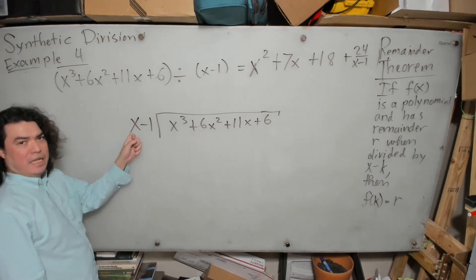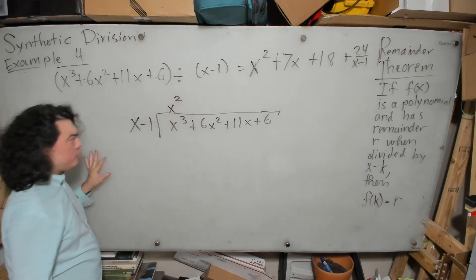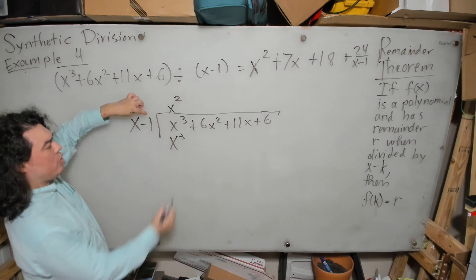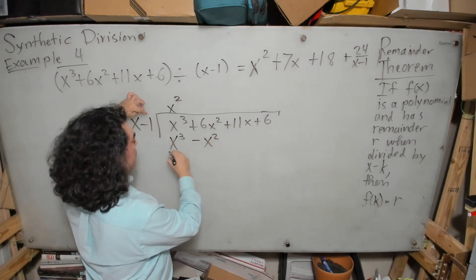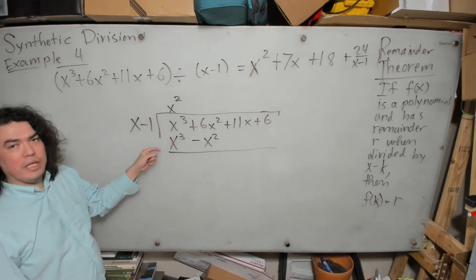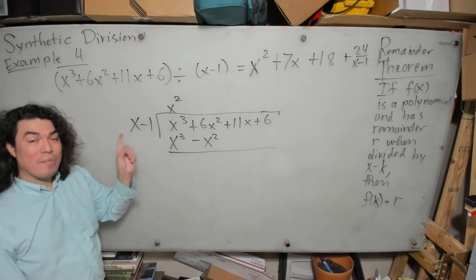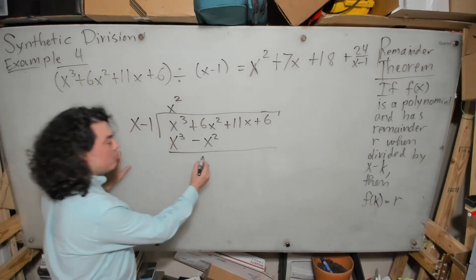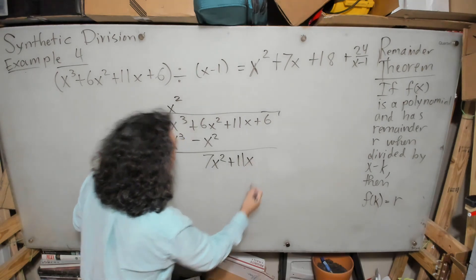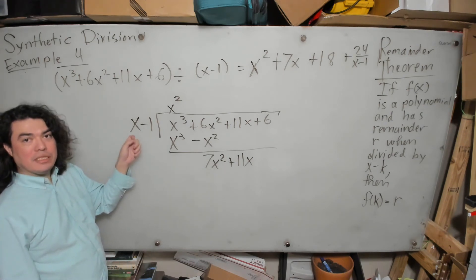How many times does x go into x cubed? It goes x squared times, because x squared times x gives x cubed. Then x squared times negative 1 is minus x squared. Performing the subtraction: x cubed minus x cubed is gone; 6x squared minus negative x squared is 6x squared plus x squared, which is 7x squared. Bring down the plus 11x.